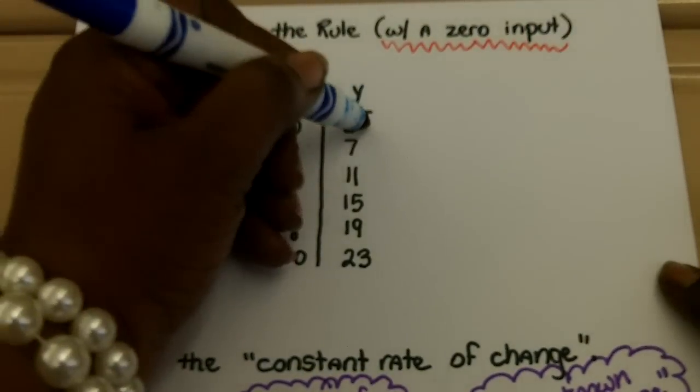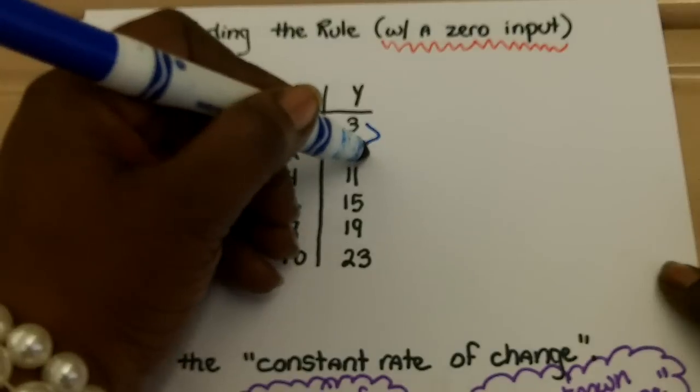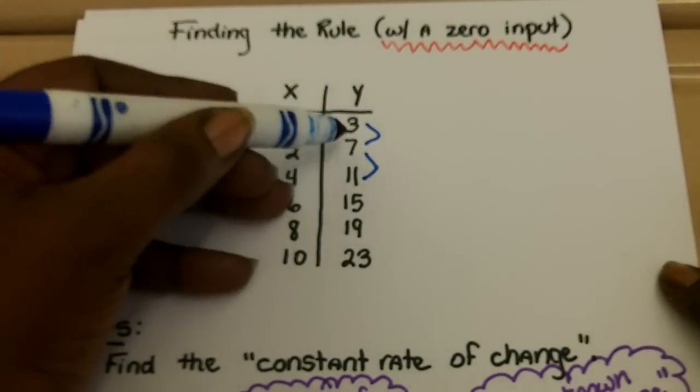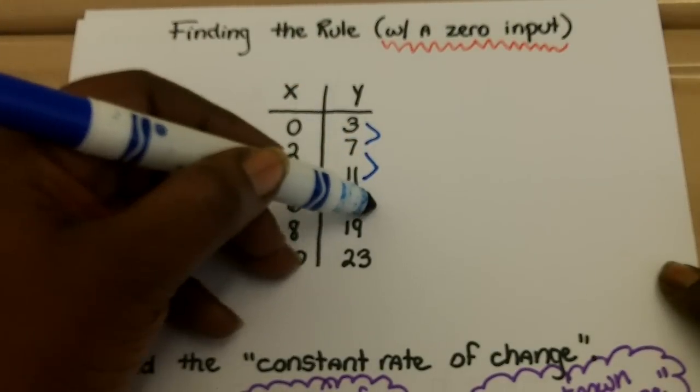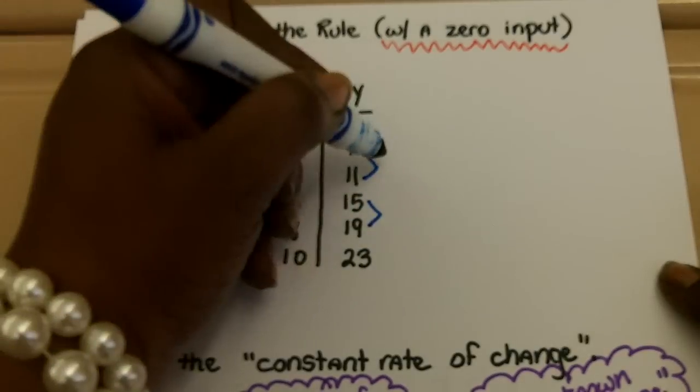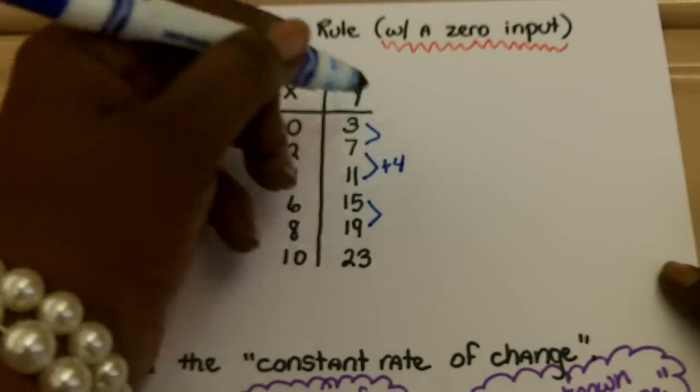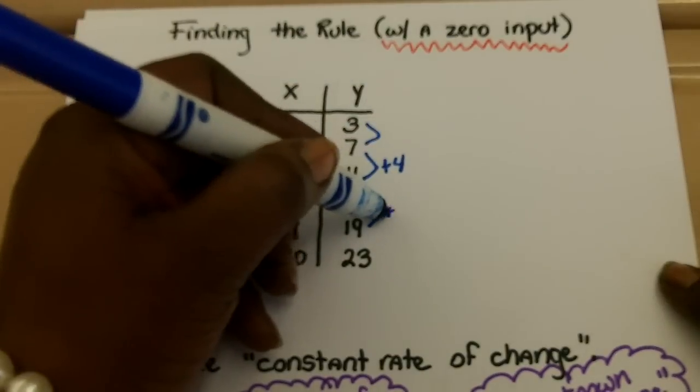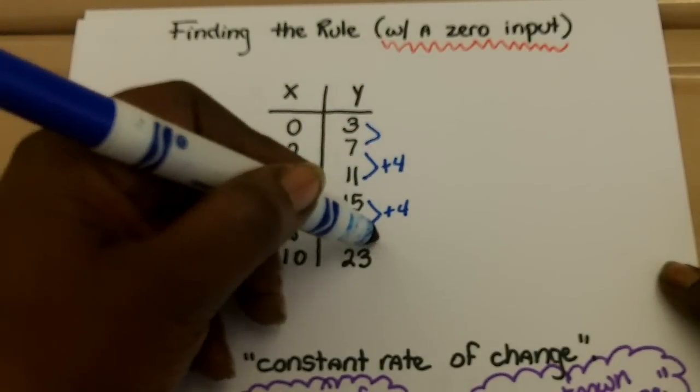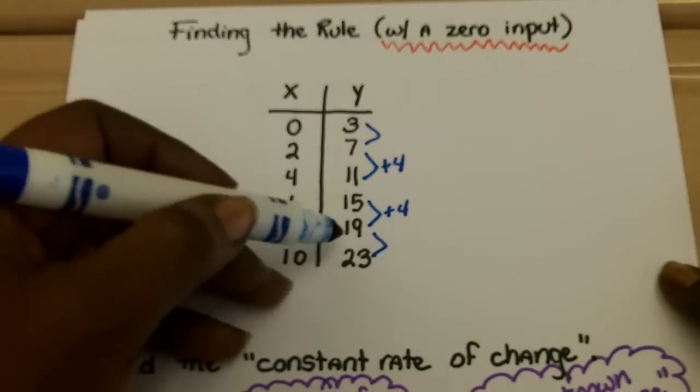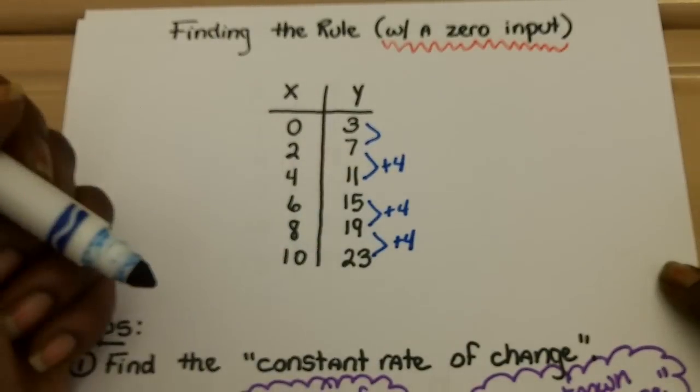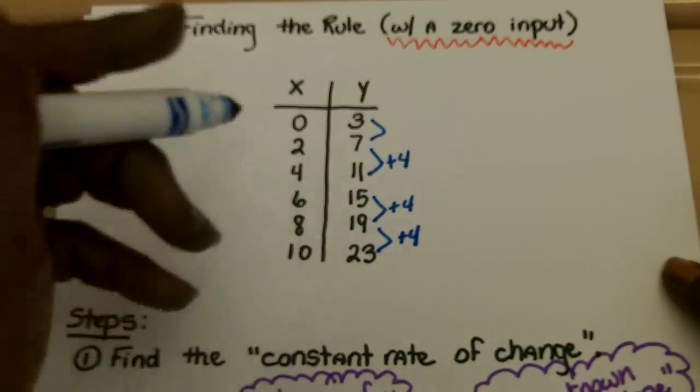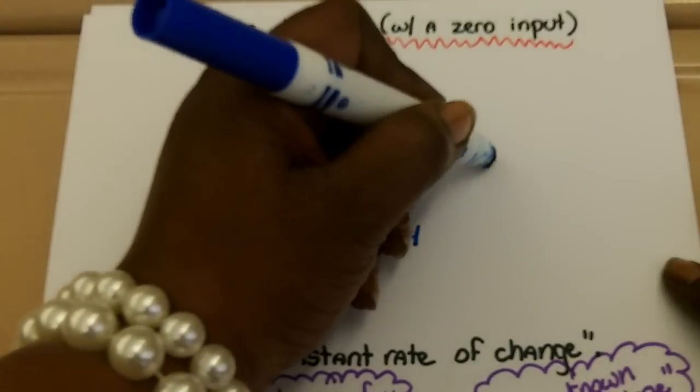First, the change of the y's or the outputs. As you go from one output to the next, we have 3, 7, 11, 15. It looks like the pattern would be to increase by 4. Every time you add 4 to the previous output, you get the following output. For example, 19 plus 4 gives me the 23. So my change of y would be 4.